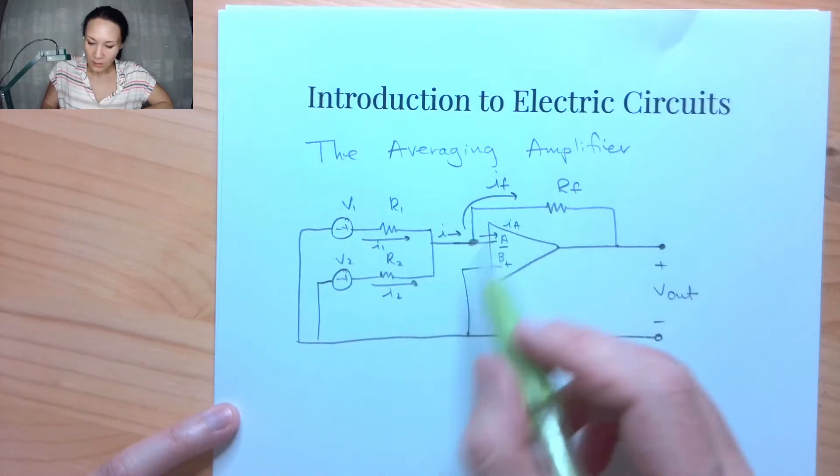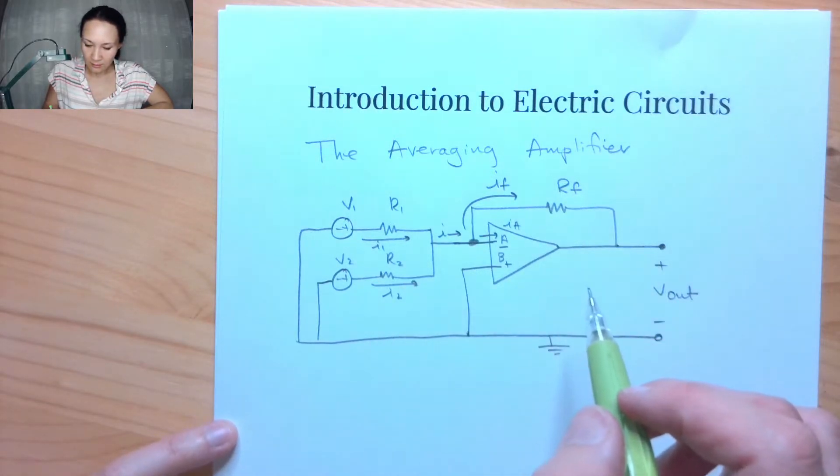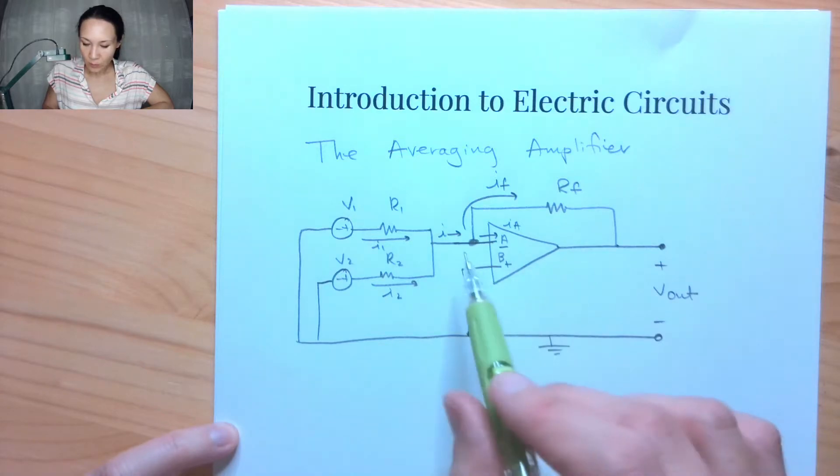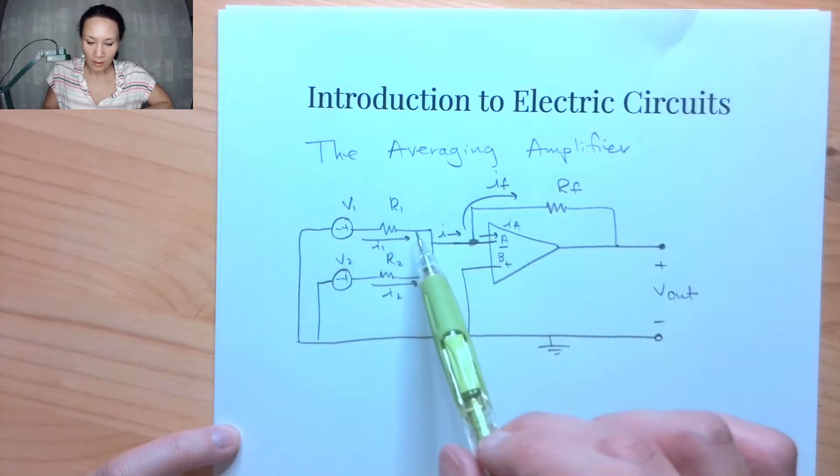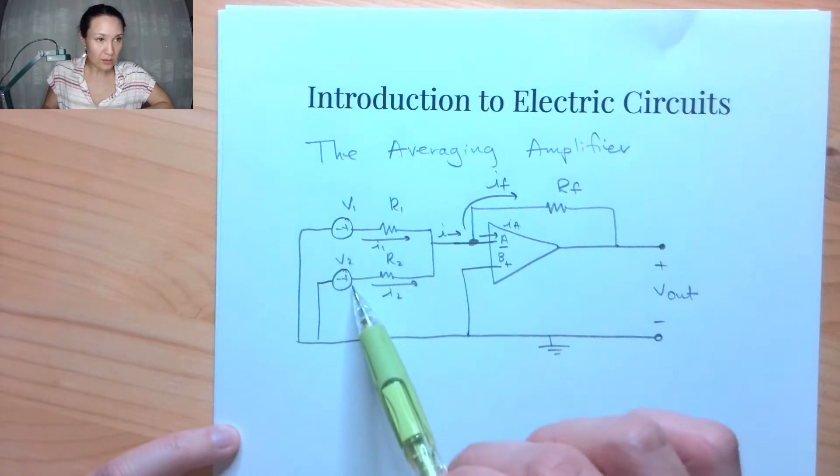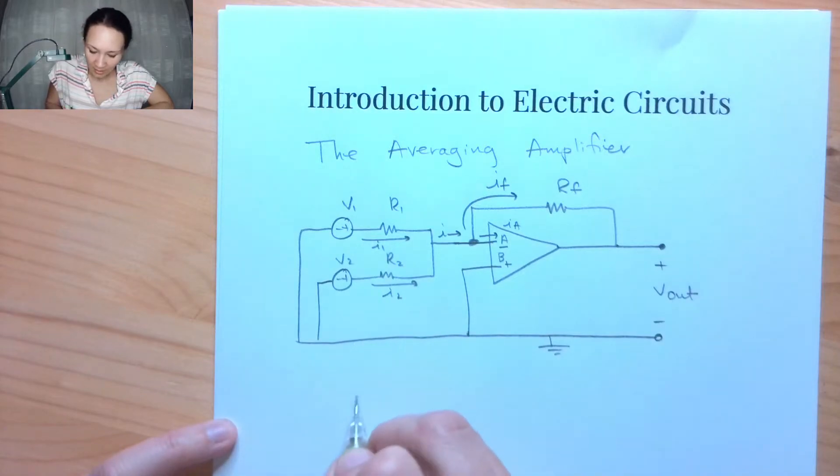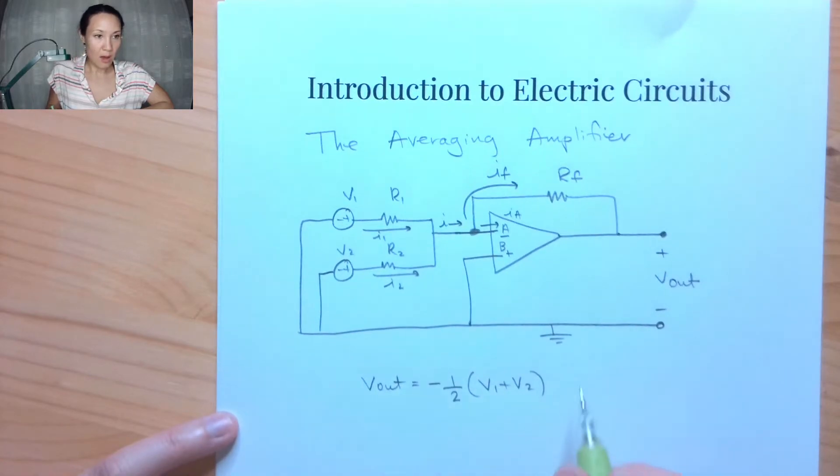So if we're to do circuit analysis on this, suppose we want to design an averaging amplifier where we want to take the average of both of these input sources. So since we only have two, that means that our V out, since it's inverting, will be negative one over two times V1 plus V2. So our circuit here is going to implement this.